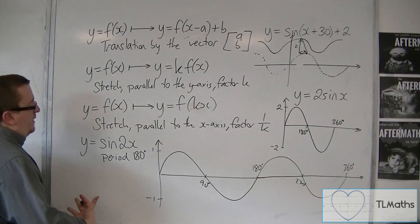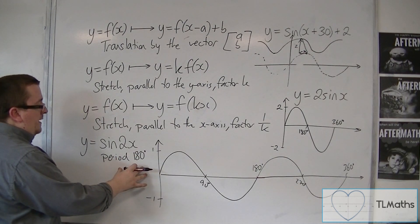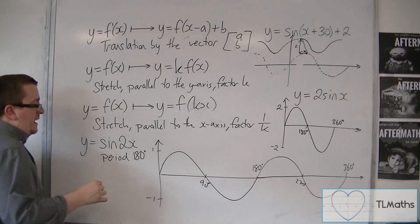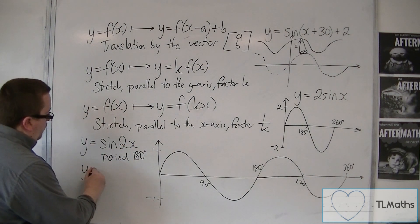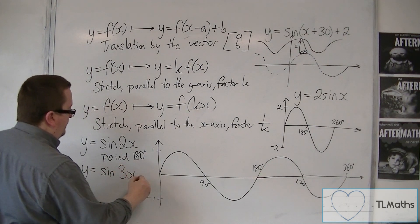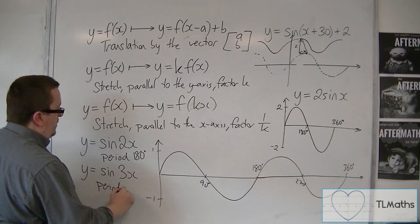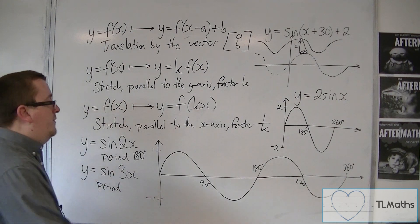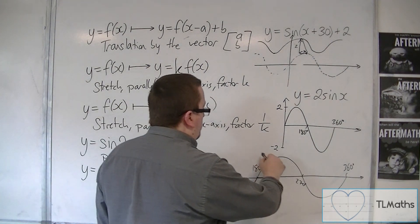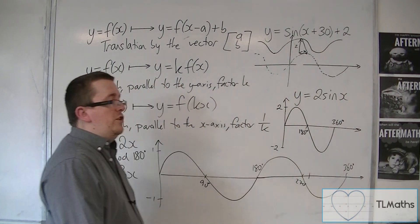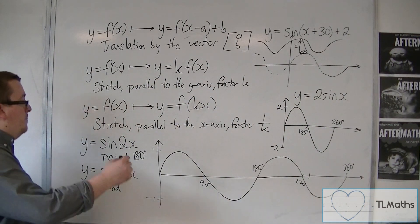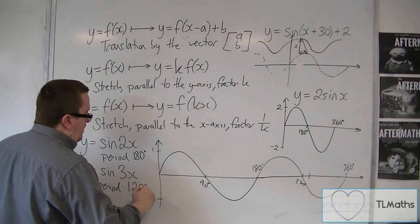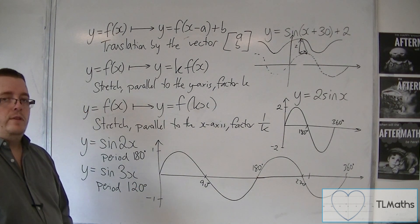Effectively, the original period of 360 has been divided by that number in front of x. So if we had y = sin(3x), that's a stretch parallel to the x-axis by factor 1/3, meaning we can fit three sine curves between 0 and 360. The period is 360 ÷ 3 = 120 degrees.